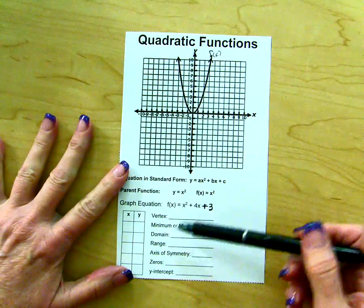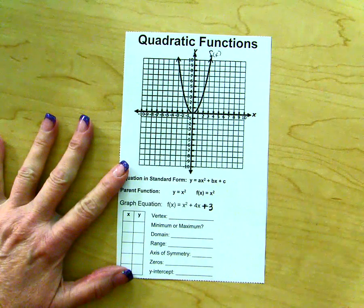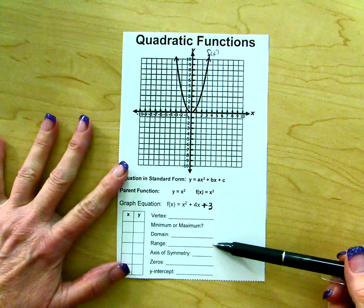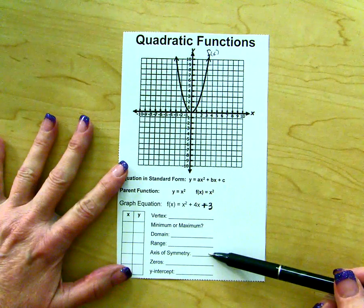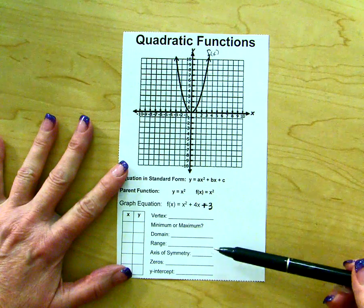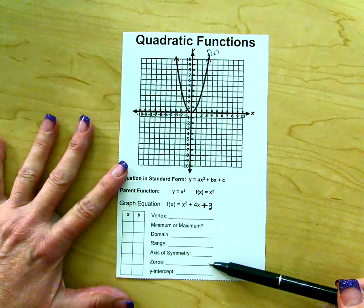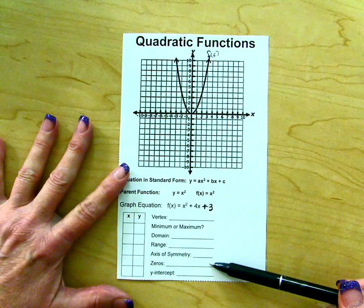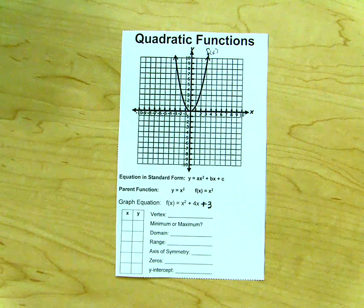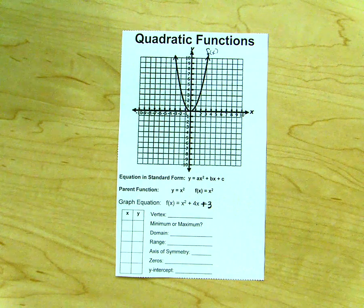We will be looking at various parts of the graph. We're going to be looking for the vertex — is that vertex a minimum or a maximum value for the graph? What is the domain of the function? What is the range of the function? What is the axis of symmetry, which is a line that will cut it in half? What are the zeros, which means where are the places where y equals zero? And what is our y-intercept, which is of course where the graph will cross the y-axis.